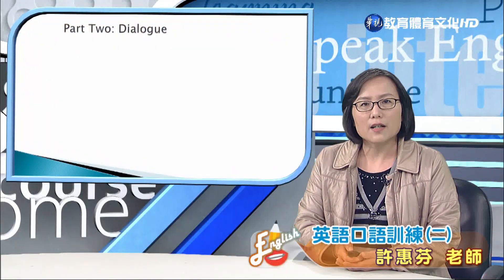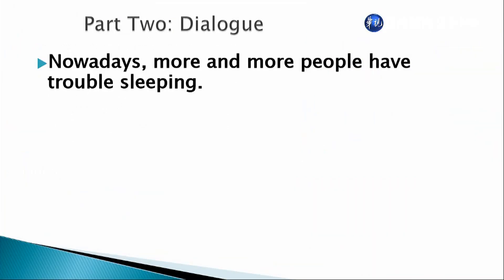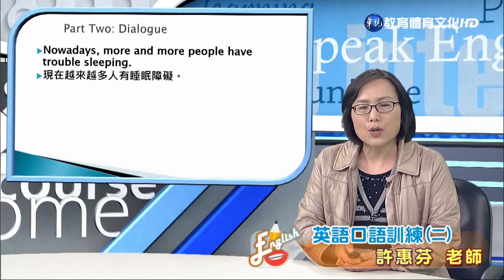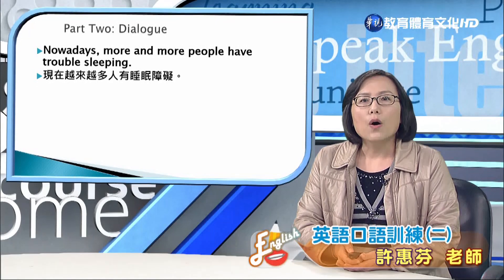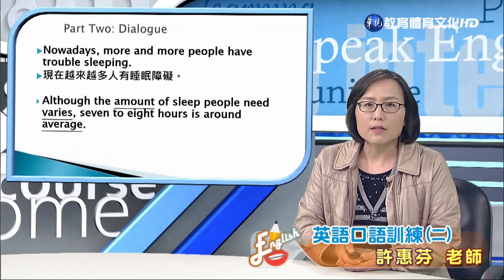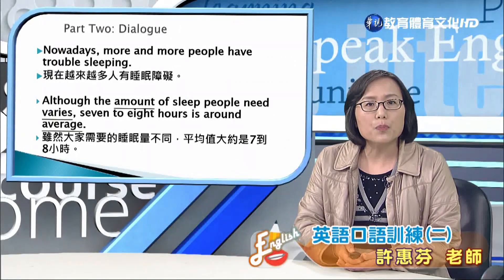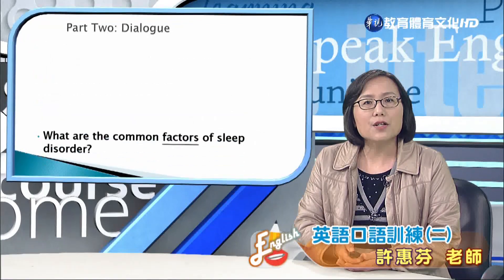After we watch the video, let's review the contents of the dialogue. 'Nowadays, more and more people have trouble sleeping.' Have trouble or have difficulty — 就是有麻煩，後面有動詞必須要加ing，所以我們說have trouble sleeping. 'Although the amount of sleep people need varies, seven to eight hours is around average.' 主詞是the amount of sleep people need，動詞是vary，就是不同、有差異。